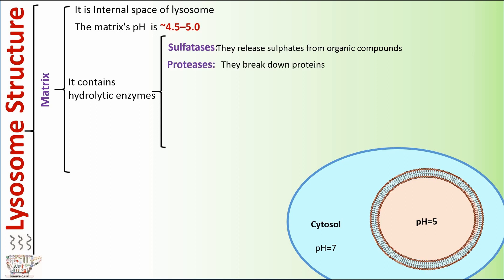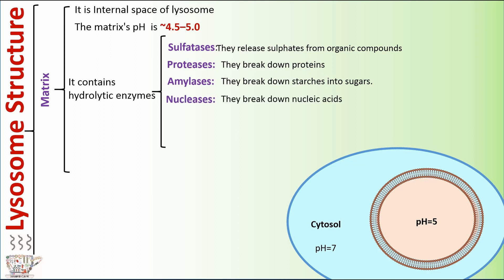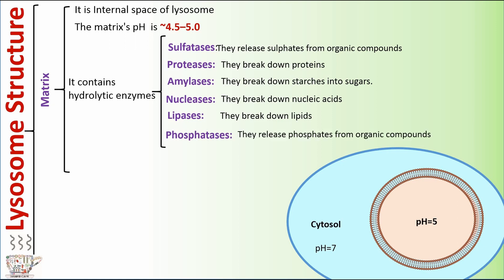Proteases break down proteins. Amylases break down starches into sugars. Nucleases break down nucleic acids. Lipases break down lipids. And phosphatases release phosphates from organic compounds. These enzymes are active only at the lysosome's acidic pH.